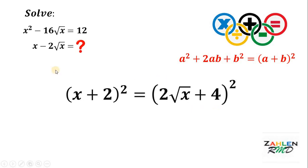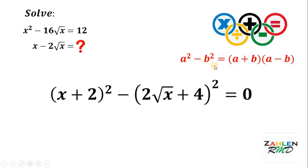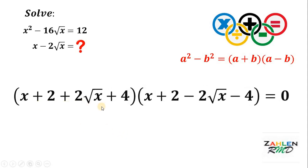Now, don't forget our goal — our goal is to find the value of x minus 2 times square root of x. To achieve that, let's equate this to 0. At this point, we are now in the form of a squared minus b squared, and it can be factored as a plus b times a minus b. In our given, a represents x plus 2 and b represents 2 times square root of x plus 4. Therefore, the left-hand side can be factored as x plus 2 plus 2 times square root of x plus 4, times x plus 2 minus 2 times square root of x minus 4.